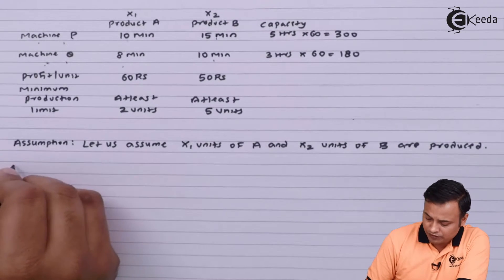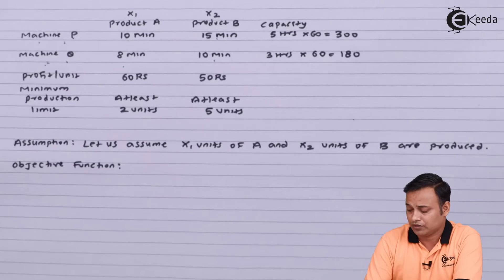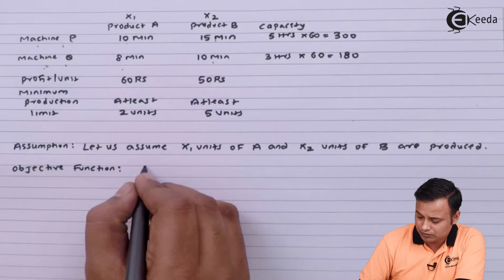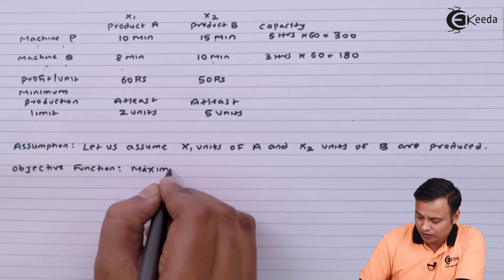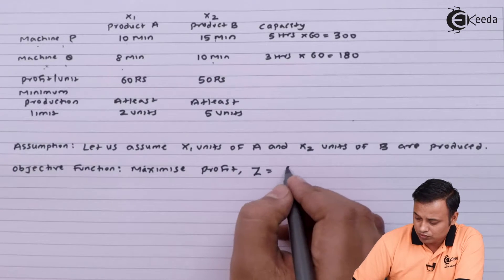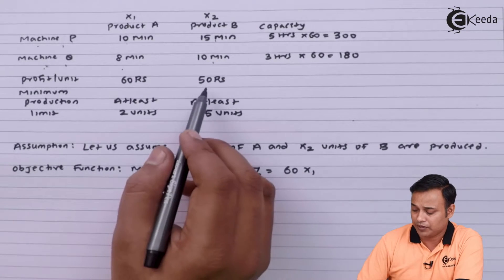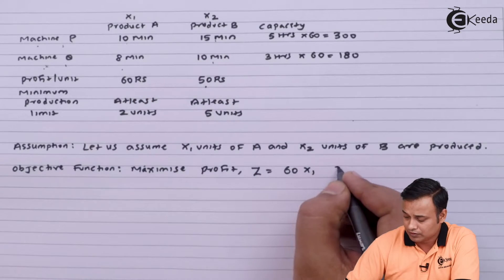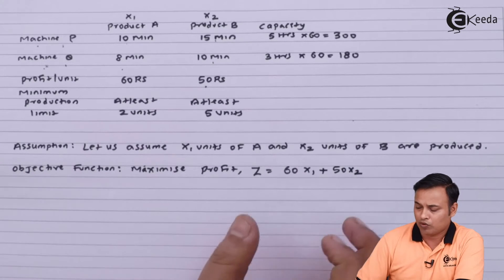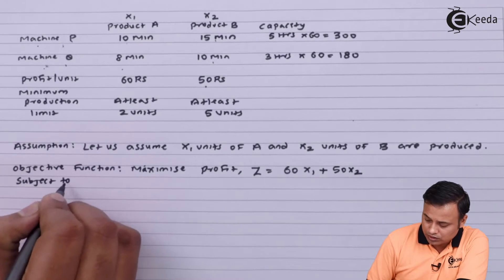How much is my profit per unit? My profit per unit is 60 rupees multiplied by x1. So I will maximize the profit. Maximize profit, z equals to 60 into x1, and my profit per unit for product B is 50 rupees multiplied by x2. And I will add these two. So I will get the overall objective function. But then this objective function is subject to certain constraints.